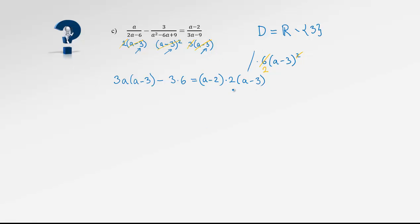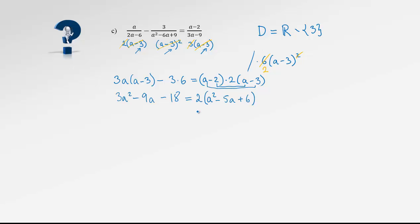After this work, we perform all multiplications and solve the polynomial equation. 3a times a is 3a squared, minus 9a, minus 18 equals — and now FOIL the two brackets: a times a is a squared, the middle term is negative 2a minus 3a equals negative 5a, and the last terms give positive 6. Multiplying by 2: 2a squared minus 10a plus 12.